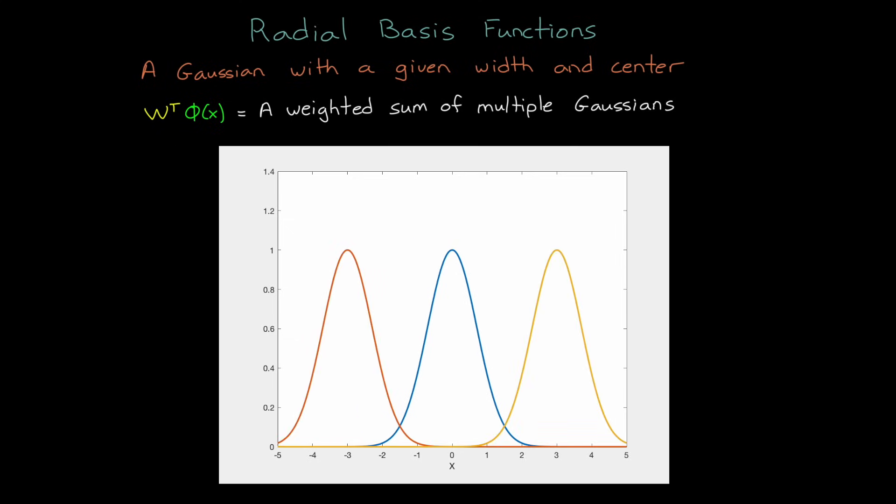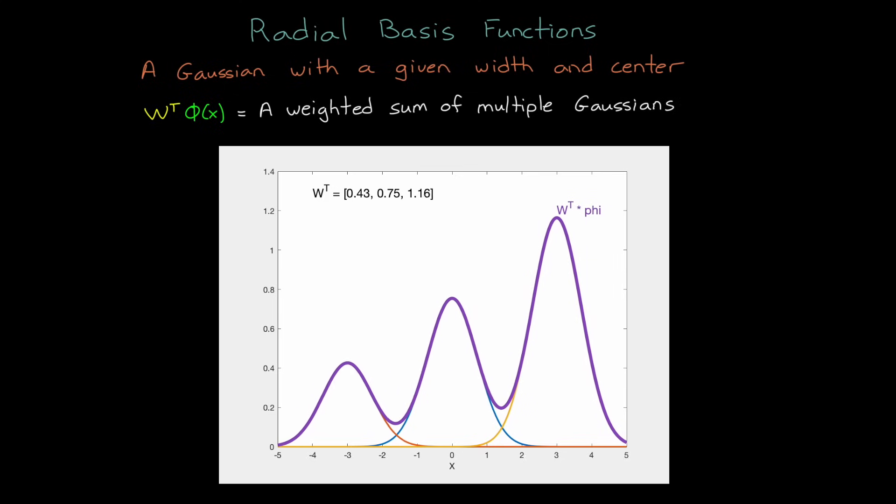For example, here I have a Gaussian that I can scale with a weighting factor. I can adjust the width of the Gaussian, and I can move the center. Now I can add two more Gaussians, centered at minus 3 and 3, each with the same width. And they all currently have the same height as well, or a weighting factor of 1. Now, the product of W transpose and phi is the function approximation, and by adjusting the weights or the height of the Gaussian, we can affect the shape of that function.